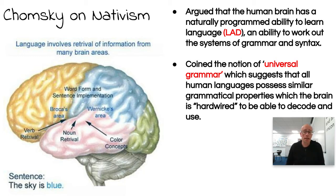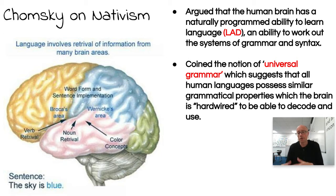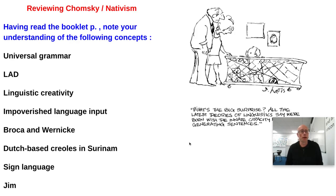Chomsky argues that the human brain has a naturally programmed ability to learn language. He calls this the LAD — Language Acquisition Device — the ability to work out the systems of grammar and syntax. It doesn't matter which language a child encounters; as long as they're exposed naturally to language around them, they'll work it out without being taught the rules. He also argues that all languages of the world have a kind of universal grammar — all possess verbs, nouns, and adjectives — which the brain is hardwired to decode.